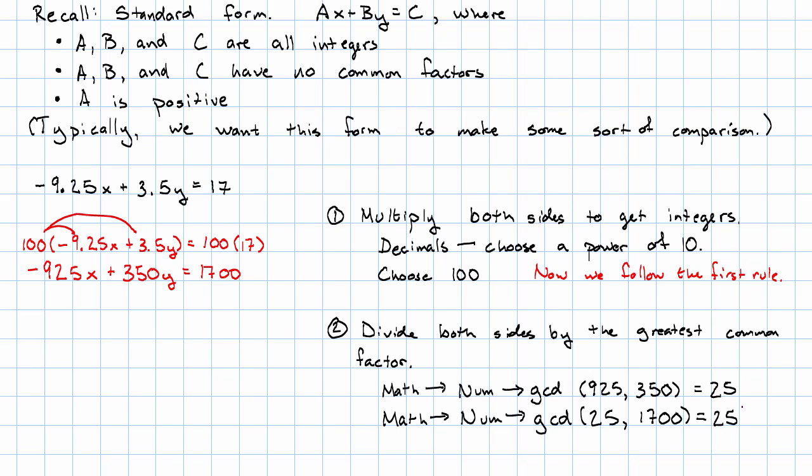So what does that mean? We want to divide both sides by 25, which we can think of as multiplying by 1/25. Next, we distribute. So I'll have 1/25 times negative 925x plus 1/25 times 350y is 1/25 times 1,700.